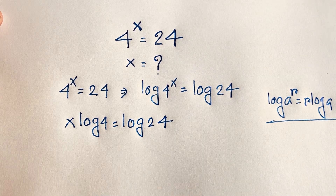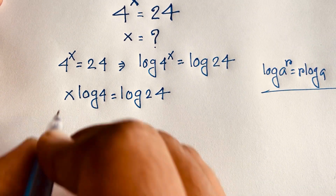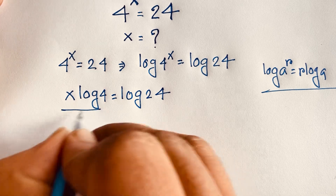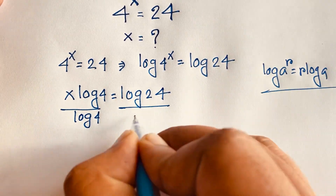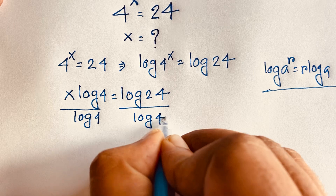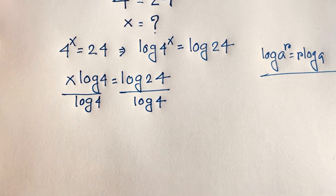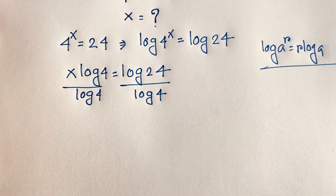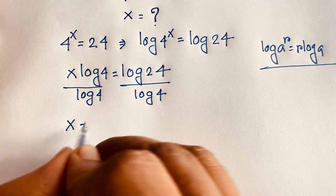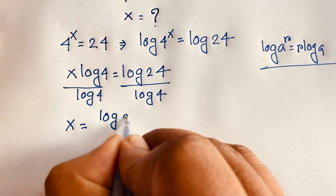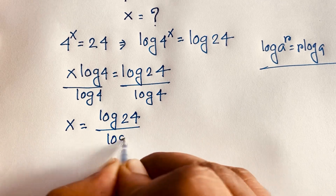Then, if I divide both sides by log 4, the log 4 terms cancel out. We will find out it will be x is equal to log 24 over log 4.